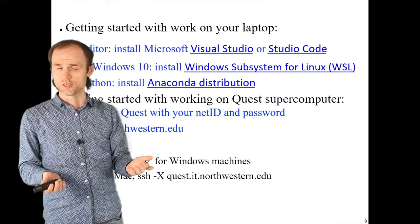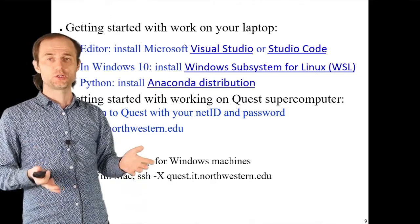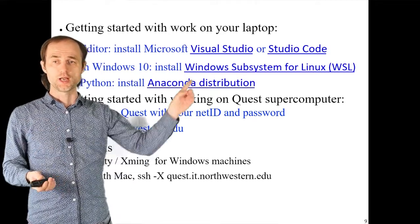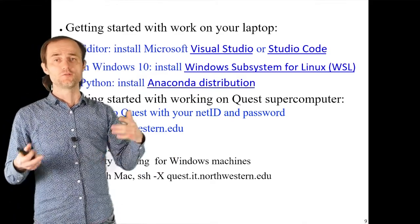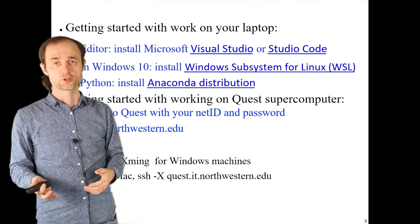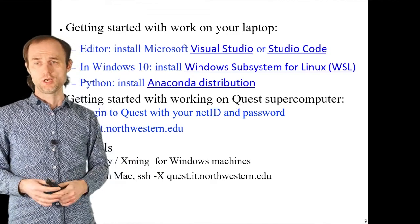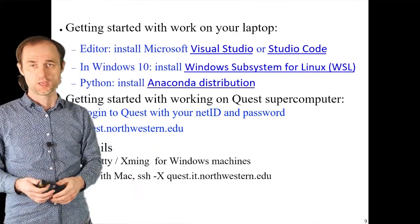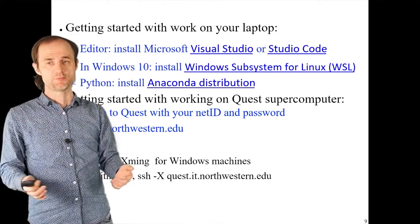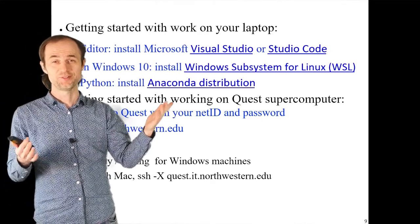In Windows 10, there is no Linux by default, but in recent years they've built a module that bakes Linux inside, very close to the Windows core. This is called Windows Subsystem for Linux, or WSL. There are two versions — WSL 1 and WSL 2 — and I recommend WSL version 2 if your system supports it. It's more powerful and basically allows you to have Linux built into Windows.